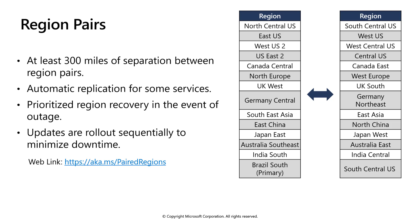Azure system updates are rolled out to paired regions sequentially, not at the same time. This is done to ensure that if an update causes a problem, it's not spread between both regions, and to also minimize downtime.